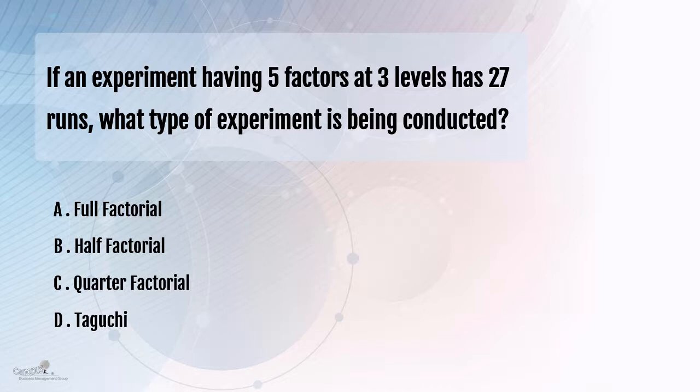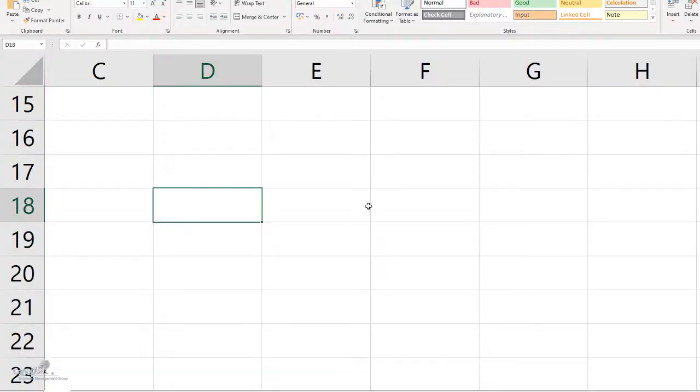Half and quarter factorial are nothing but fractional factorial experiments. A Taguchi design is a highly optimized design. I'm sure you know the formula which is used for computing the number of runs required for an experiment. It is the number of levels to the power of number of factors.